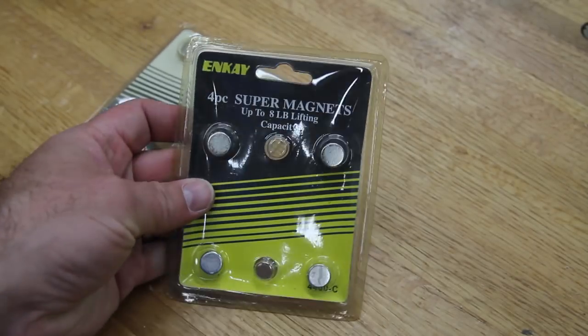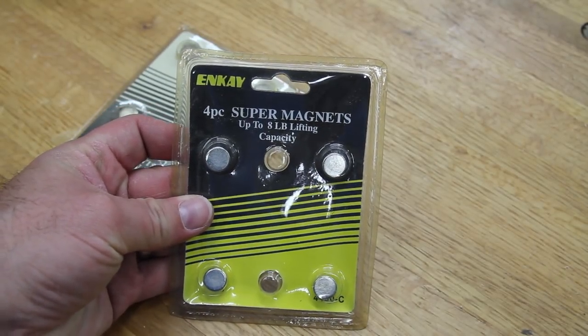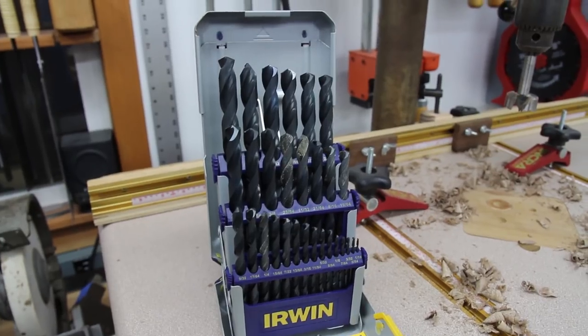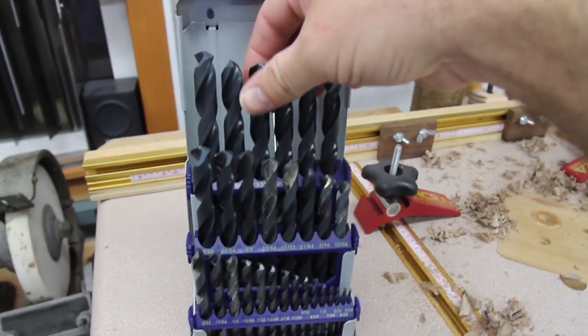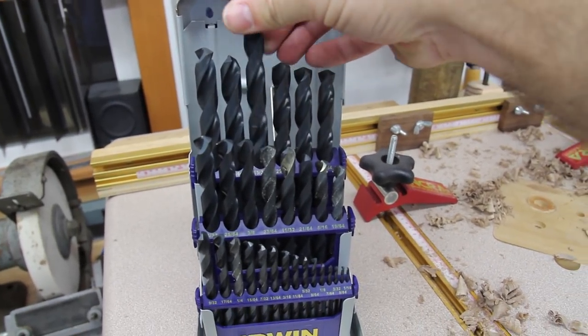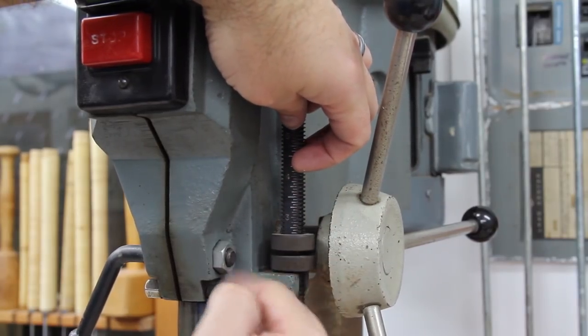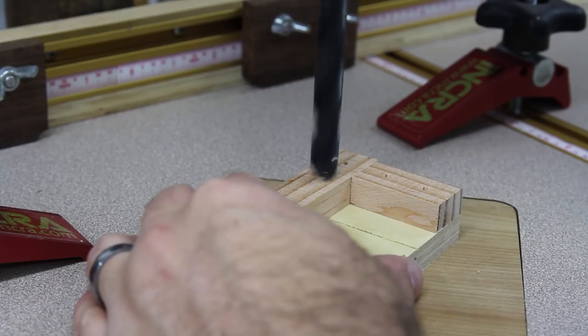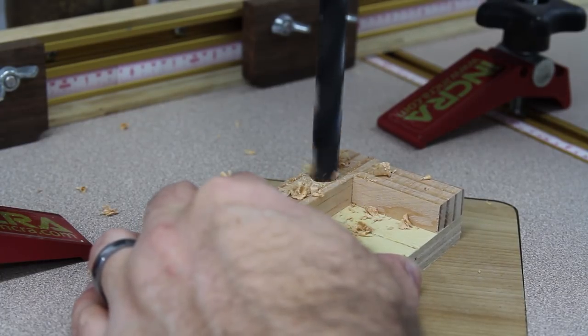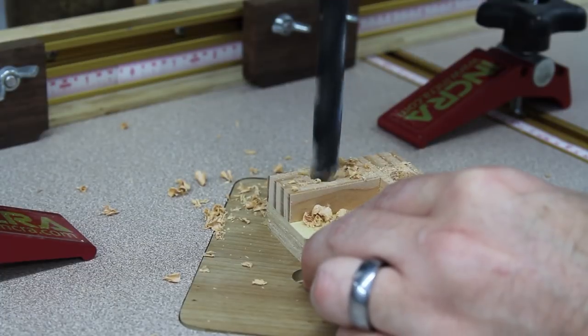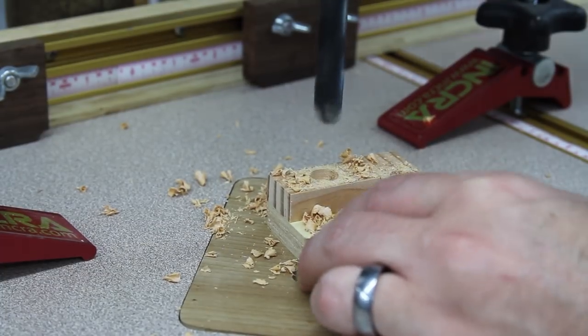When I found these magnets in a drawer they actually gave me the idea for this project in the first place. Unfortunately the diameter of those little magnets is actually 15/32nds of an inch, so I couldn't use any of the Forstner bits that I owned to drill the holes. The holes didn't end up with a flat bottom like I would have liked, but it turned out just fine because it left a little space for the epoxy underneath the magnets.